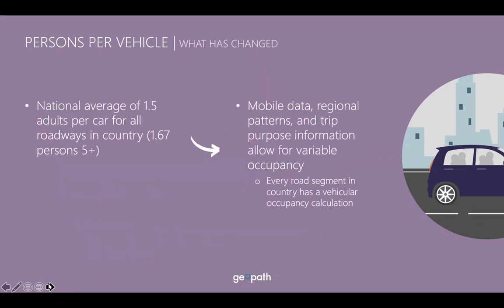In our legacy tools, if you were looking at five-plus impressions, it was about a 1.6 average for persons per vehicle, but for total persons zero-plus, the national average of 1.5 persons per car was used. That was the best data we had at the time. Now, because of richer and more granular data sources — mobile data and understanding how people move through markets — we have a much more detailed understanding of the actual number of people per vehicle by road segment in a particular area.